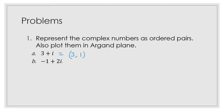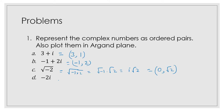The next one: minus 1 plus 2i. So this is equal to minus 1 comma 2. The next one: square root of minus 2. We should be very careful — do not say there is no imaginary part. If we write clearly, it is square root of minus 1 into 2, which equals square root of minus 1 times square root of 2, equals i root 2. So this is 0 comma square root of 2. The last one: minus 2i. This is equal to 0 comma minus 2, since there is no real part and the coefficient of i is minus 2.